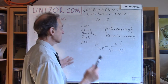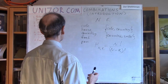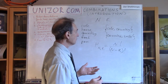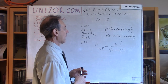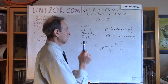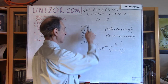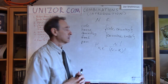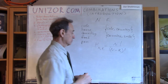Basically, the combination is a subset — that's what it is. So let's just count how many combinations we have out of these five objects taken two at a time.